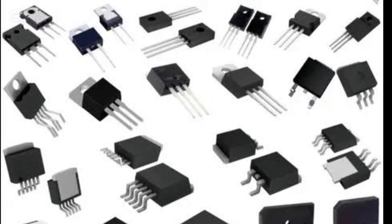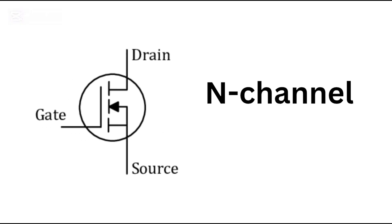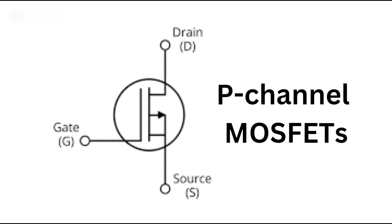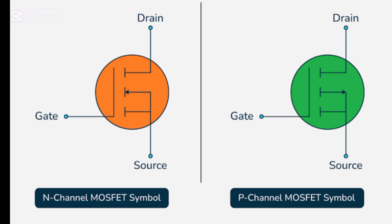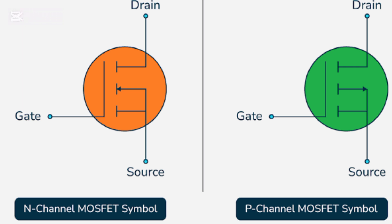MOSFETs come in various shapes. The two most common types are N-channel and P-channel MOSFETs. N-channel MOSFETs are favored for high-speed switching, while P-channel MOSFETs are used in specific applications like high-side switching.